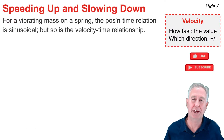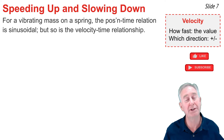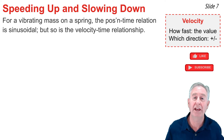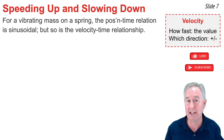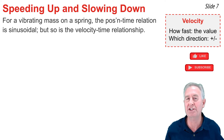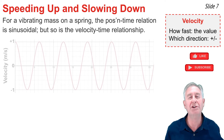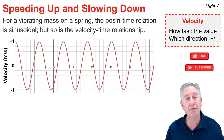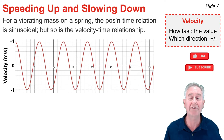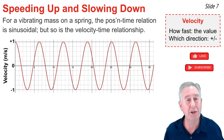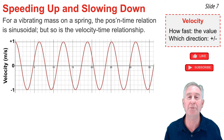For a vibrating mass on a spring, the position varies sinusoidally as a function of time. But position-time is not the only sinusoidal relationship — so is the velocity-time relationship. When we speak of velocity in physics, we're referring to speed with direction: a number representing how fast the object is going, and a plus or minus sign telling us which direction. So when we say the velocity is positive one meter per second, we mean the speed is one meter per second in the positive direction. Here's the velocity-time graph for a vibrating mass on a spring — notice its sinusoidal shape.